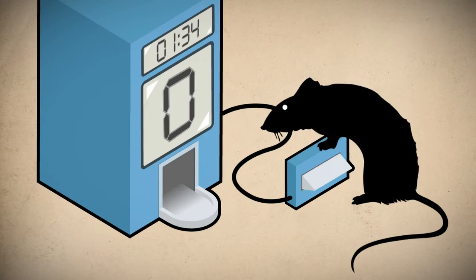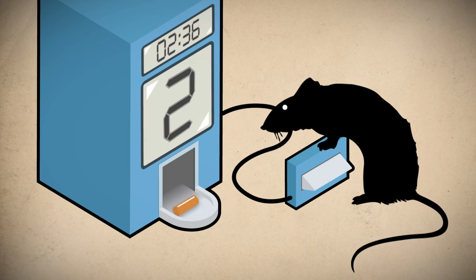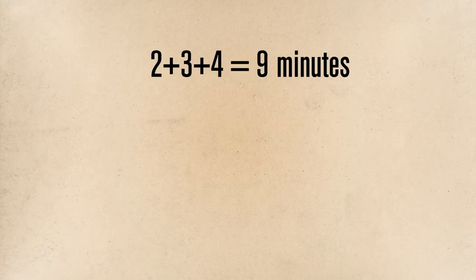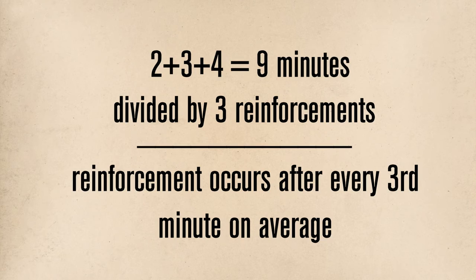On a variable interval schedule, on average, reinforcement occurs for the first response after a specific interval. For example, on a variable interval schedule of three minutes, the timer might be initially set for an interval of four minutes. The first response to occur after four minutes is reinforced. The timer is then started again and may be set for two minutes. The first response to occur after two minutes is now reinforced. The timer is started again and this time may be set for three minutes before reinforcement occurs. If we add the number of minutes in each interval and divide by the number of reinforcements, we have reinforcements that occur after three-minute intervals on average.